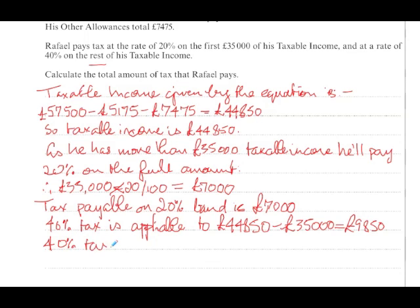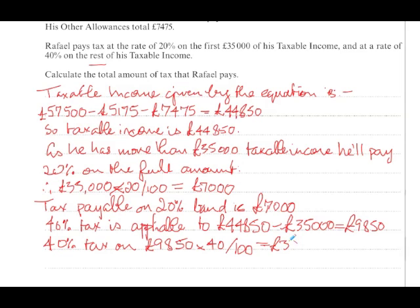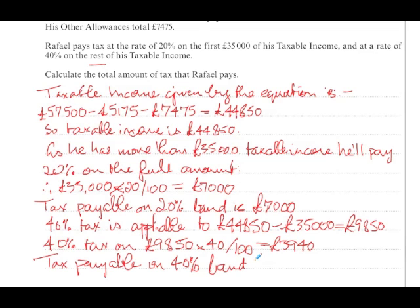40% tax on £9,850 — that's times 40 over 100 — equals £3,940. So tax payable on the 40% band is £3,940.